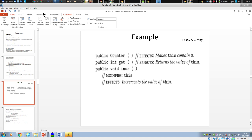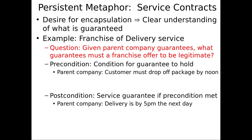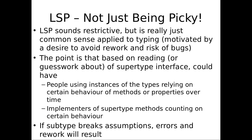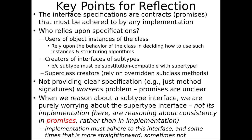One of them is users of these things — people who create an instance and want to use it. I'm going to get a counter and use it — call increment on it and get on it until the sun goes down. The other set of users for these specifications are people who implement subtypes of this.